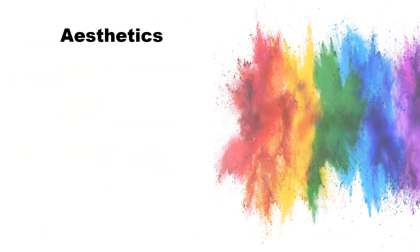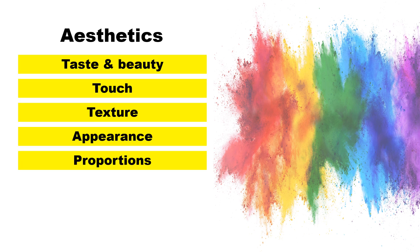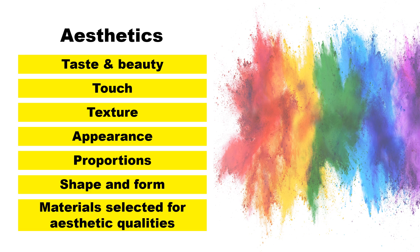Aesthetics is about ideas about tastes and beauty. Touch, texture, appearance, proportions, shape, and form are all qualities of aesthetics. Materials and components can be selected according to their aesthetic qualities.